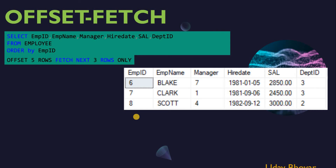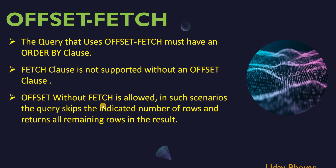To summarize OFFSET FETCH: the query that uses OFFSET FETCH must have an ORDER BY clause — without ORDER BY there cannot be an OFFSET FETCH option. The FETCH clause is not supported without an OFFSET clause, meaning we cannot pull rows using FETCH without first skipping the indicated rows using OFFSET. However, the OFFSET clause without FETCH is allowed — in such scenarios the query skips the indicated number of rows and returns all remaining rows in the result.